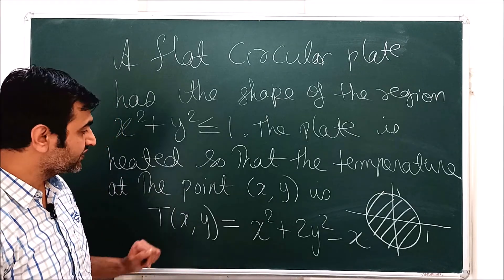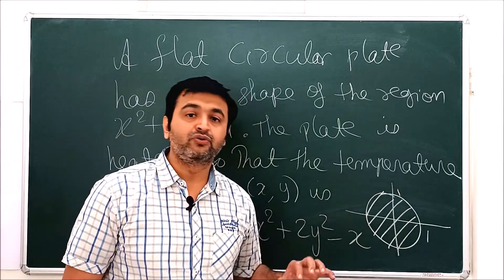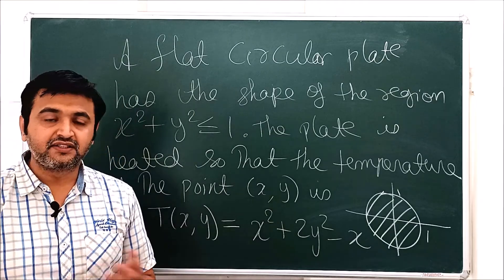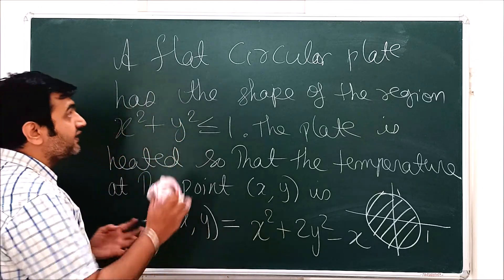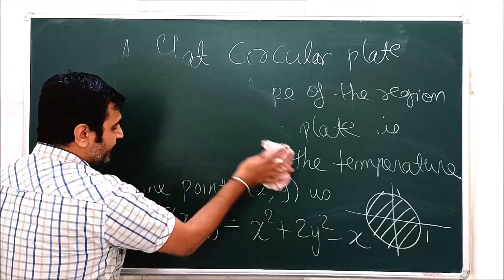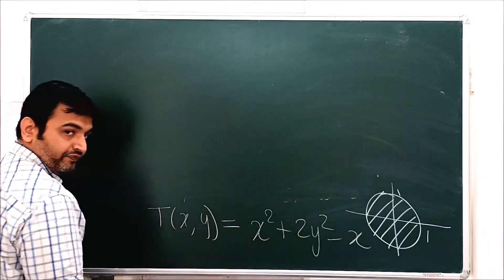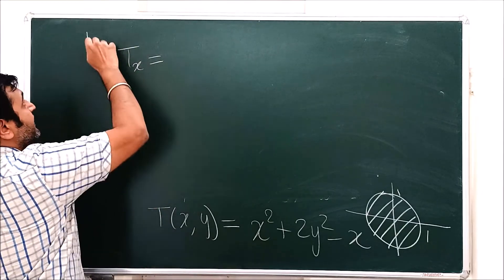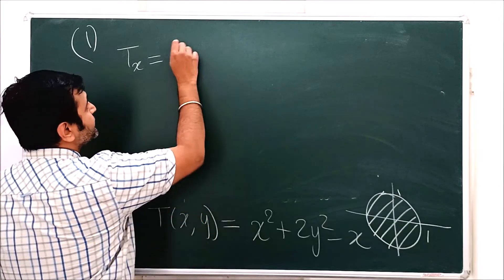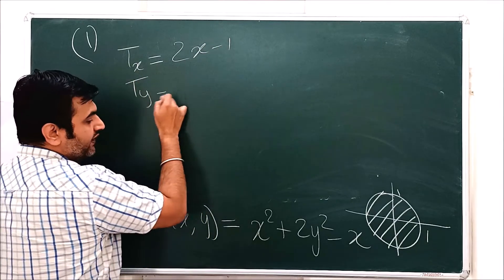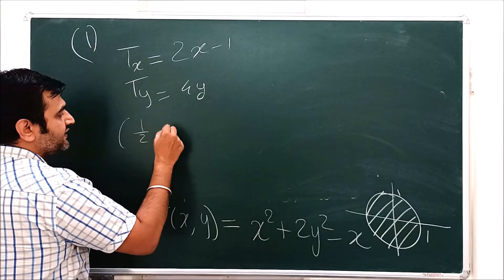Since it's a closed and bounded domain, divide into two cases. Case 1 — Interior points: take the partials and set to zero. ∂T/∂x = 2x − 1 = 0 gives x = 1/2, and ∂T/∂y = 4y = 0 gives y = 0. The point (1/2, 0) is indeed an interior point of the disk.